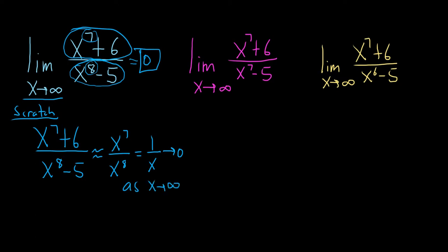Remember, when the bottom gets big, the fraction gets smaller. If you're ever confused by that, always go back to basics. Think about 1 over 10, that's 0.1. And think about 1 over 100, that's 0.01.